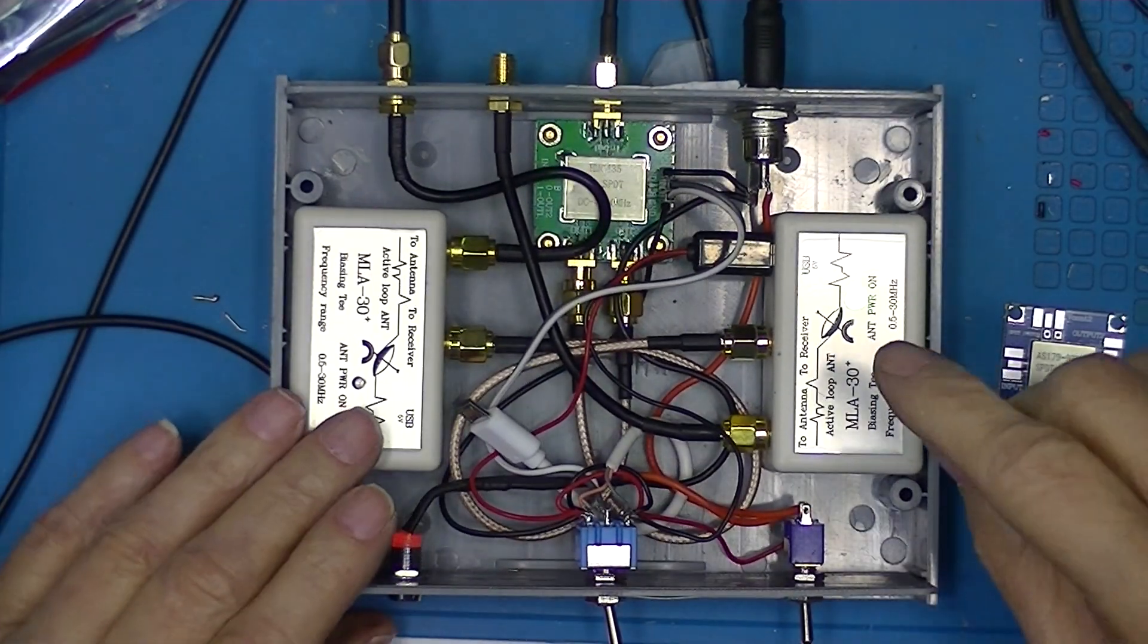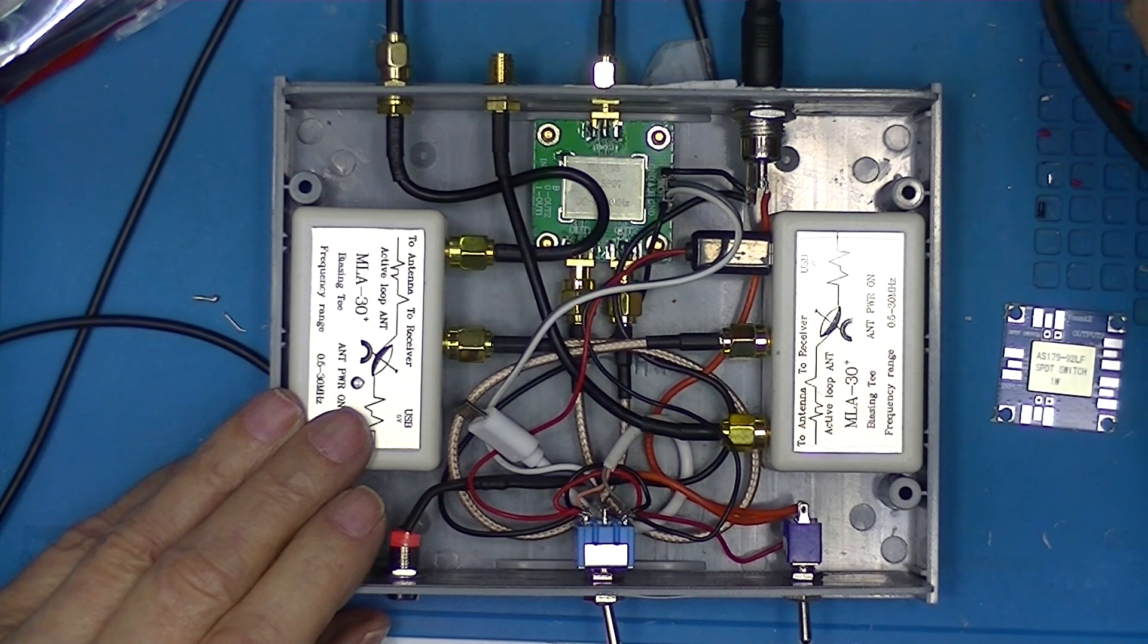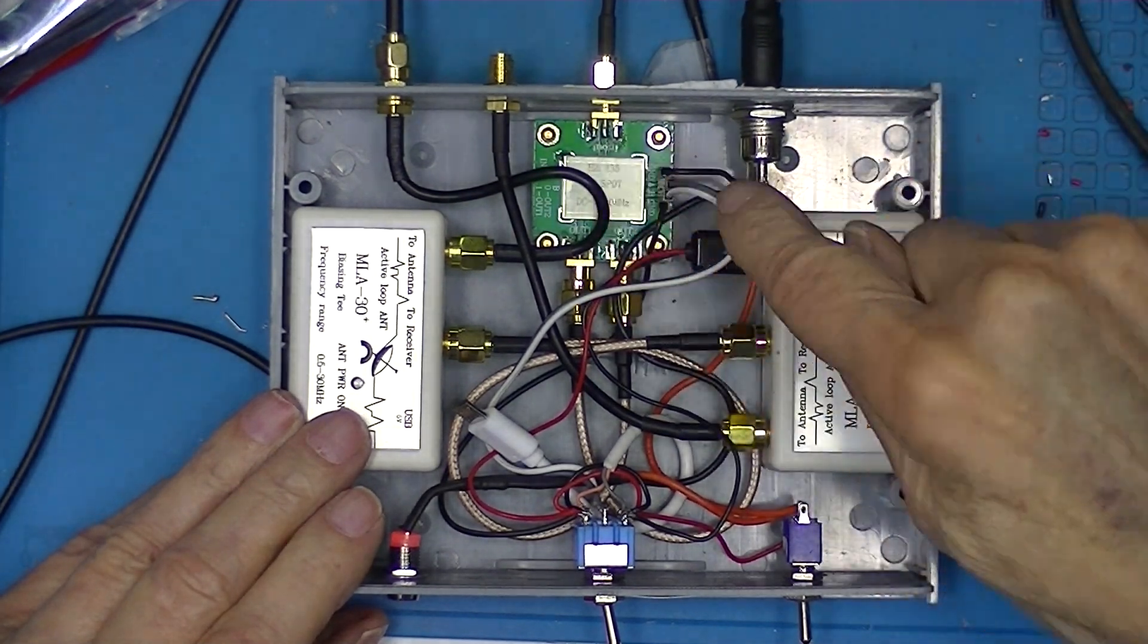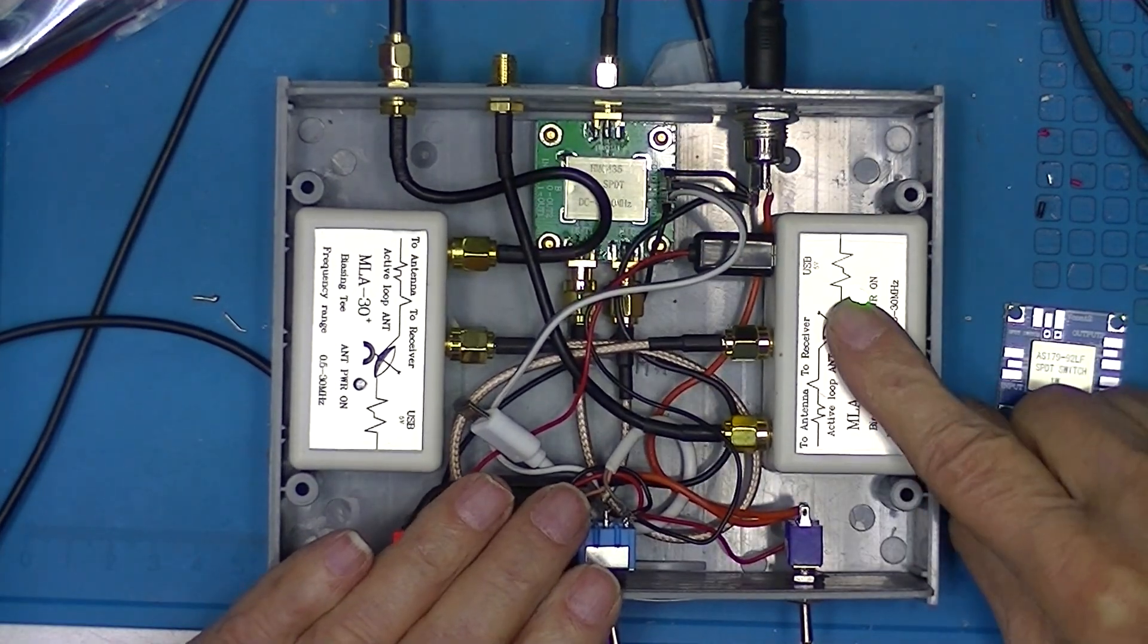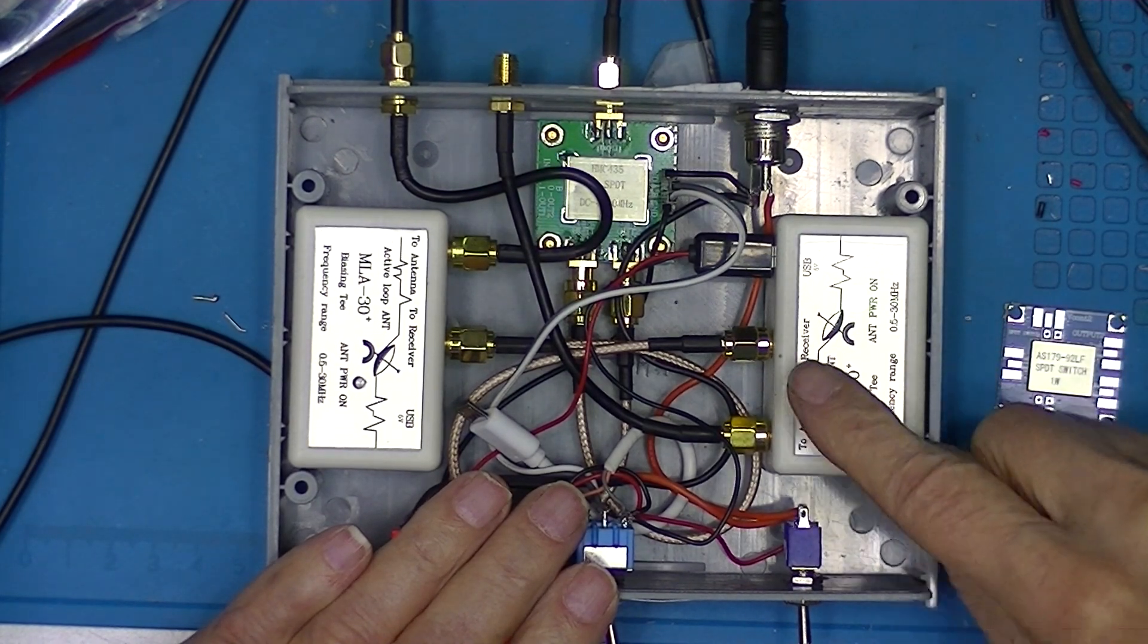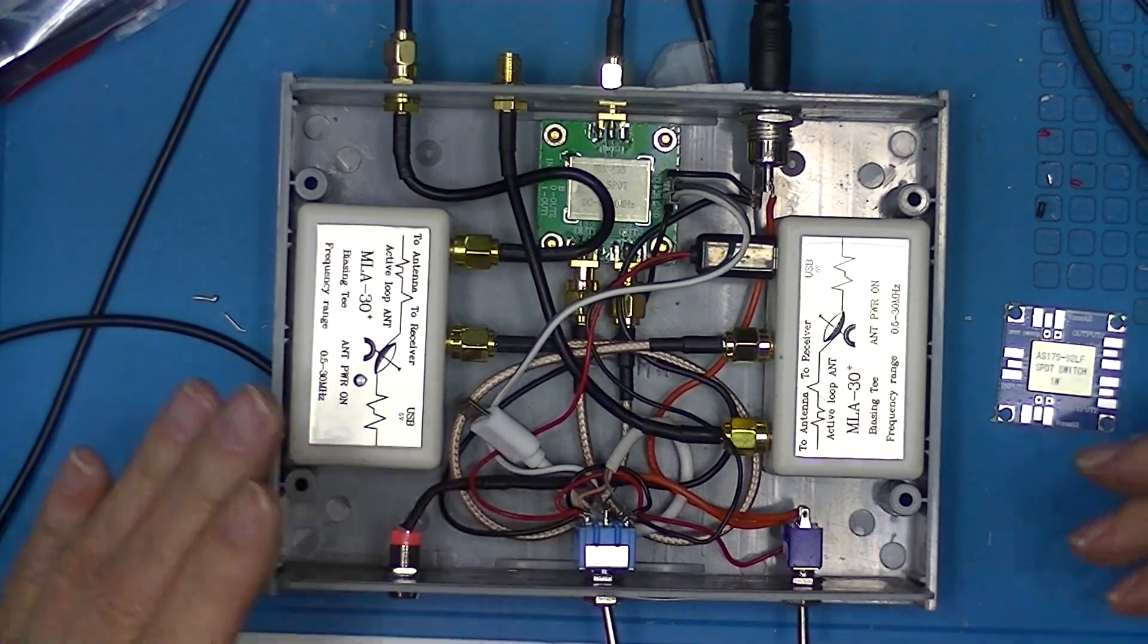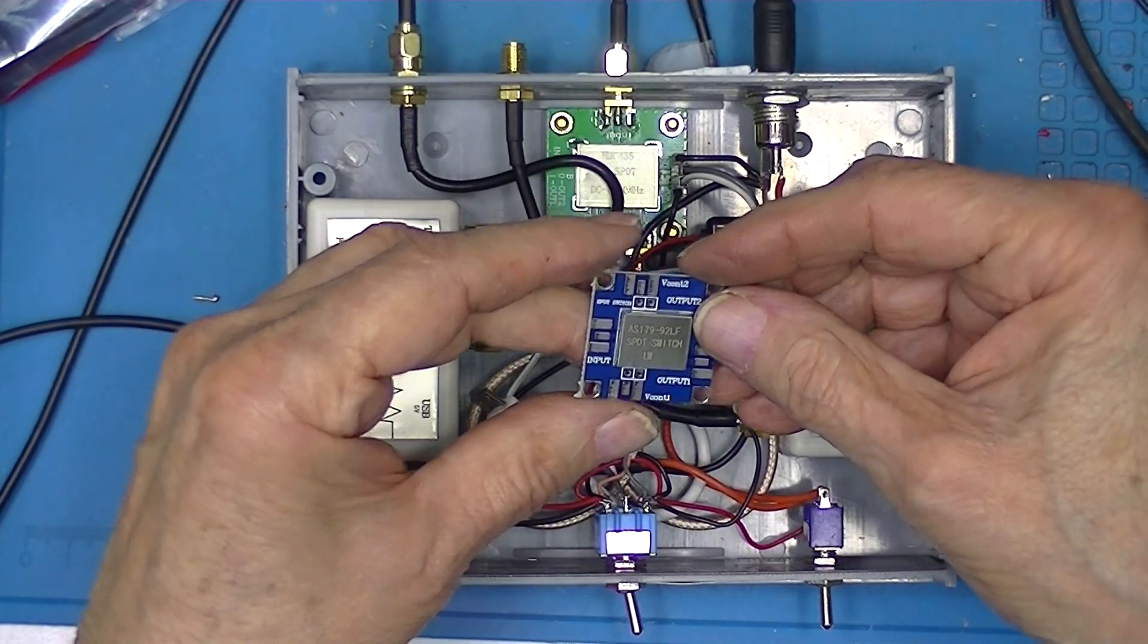When I connect the output from this bias T to my receiver directly, bypassing this switch, I get a nice WWV signal. It's a little bit noisy but it works. When I reconnect it to this bias T, I get nothing.